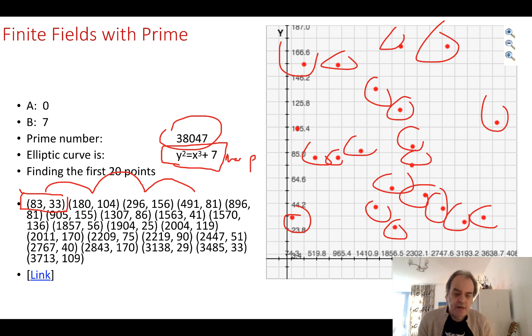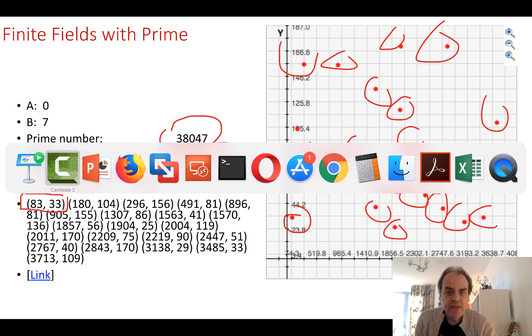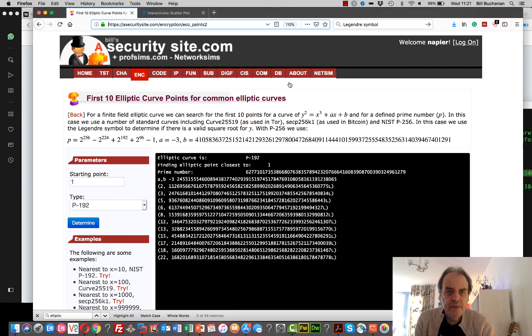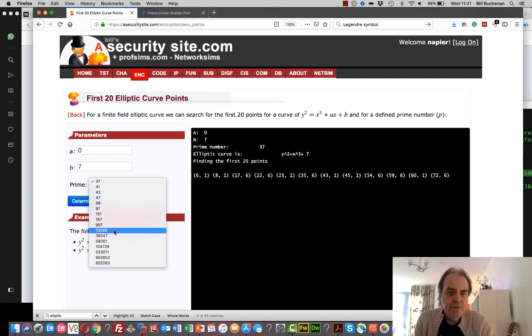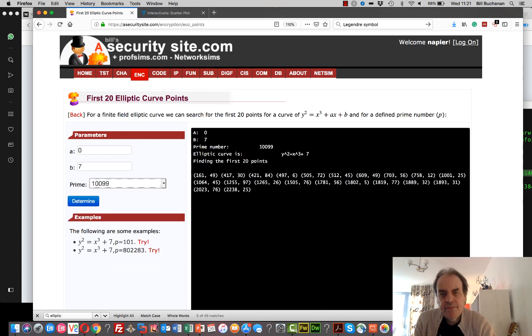We end up with this type of pattern. Let's have a look to see what that looks like. We'll take a prime number, this prime number here, and we have y squared equals x cubed plus seven with this prime number.